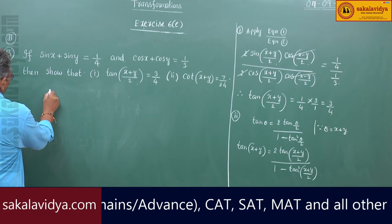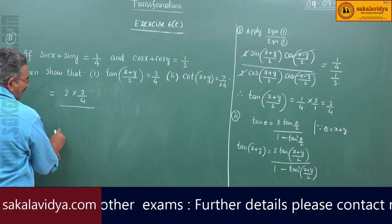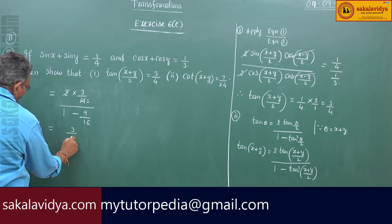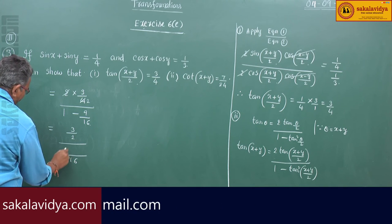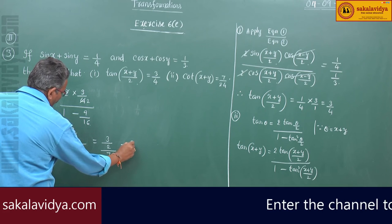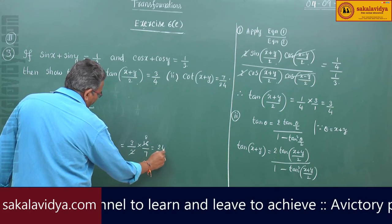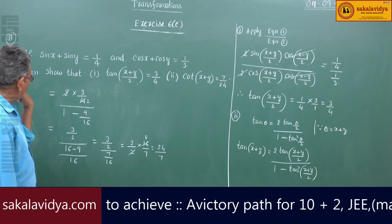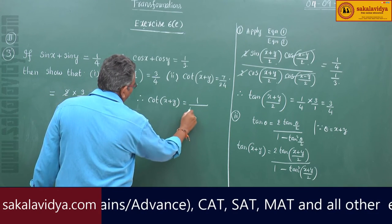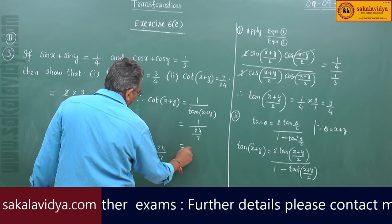Substituting, tan(x+y) equals 2 × (3/4) divided by 1 minus (9/16), which is (3/2) divided by (7/16). This equals (3/2) × (16/7) = 24 by 7. But we require cot(x+y), which is the reciprocal of tan(x+y). Therefore, cot(x+y) equals 7 by 24.